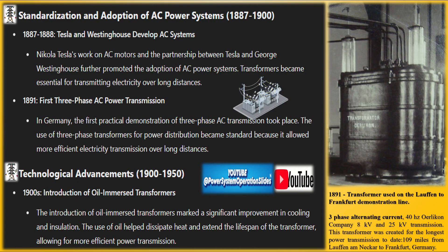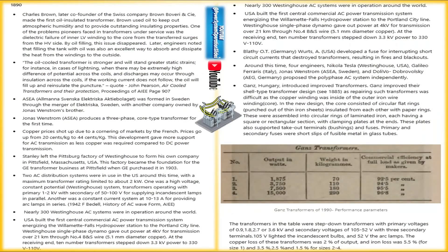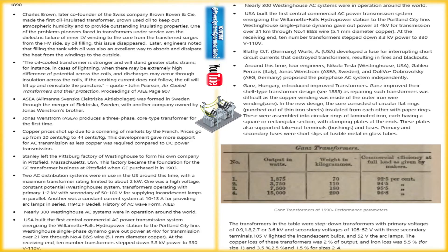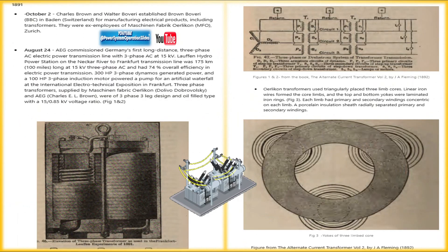Between 1880 and 1882, Sebastian Ziani de Ferranti and William Thomson worked on one of the earliest AC power systems, while Charles F. Brush refined transformer designs and Nikola Tesla advocated for a multi-phase system. Edison's DC power station in New York and the developments in AC systems by engineers such as Ferranti, Gollard, Gibbs, and Tesla were pivotal in the evolution of electrical distribution.